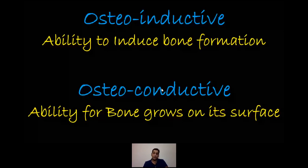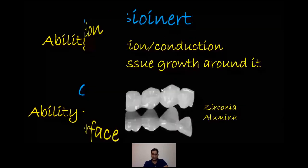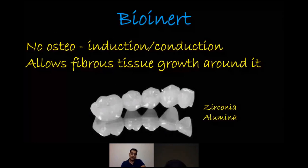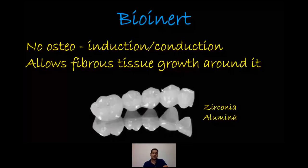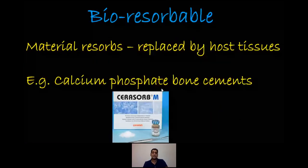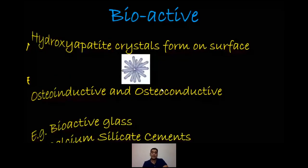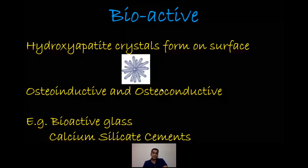If a material is osteoconductive, it has the ability for bone to grow on its surface. A bio-inert bioceramic means there's no osteoinduction or osteoconduction, but it allows fibrous tissue growth around it — for example, zirconia or alumina crowns. A bio-resorbable material is resorbed and replaced by the host tissues, such as calcium phosphate bone cements. Bio-active materials — examples being bio-active glass and calcium silicate cements — have the key property of forming hydroxyapatite crystals on their surface when in contact with tissue fluid, and are both osteoinductive and osteoconductive.